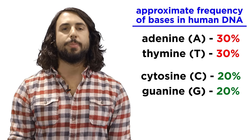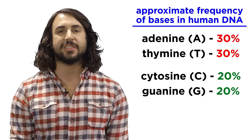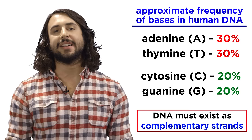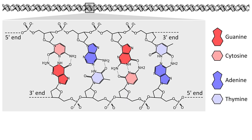Now comes the interesting part. Before we fully understood the structure of DNA, we noticed that pairs of bases were always present in roughly equal amounts, those pairs being A and T, as well as C and G. After much research we finally understood that this is because DNA exists as two strands that pair up in a base-specific manner, meaning that the two strands are complementary. Everywhere that there is a C on one strand there is a G right across on the other strand, and everywhere there is an A there is a T on the other side.